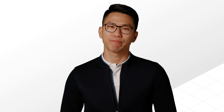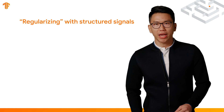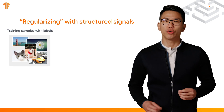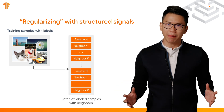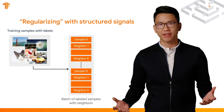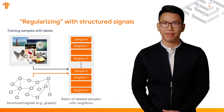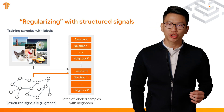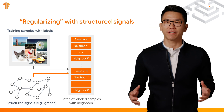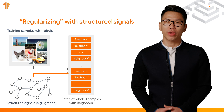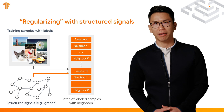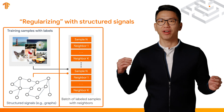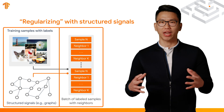Are you ready? First, each training sample is augmented to include its neighbor information from a given structure. Specifically, the neighbor information here refers to the features of a neighbor. So we get a new training batch where both the original training samples and their neighbors are included.